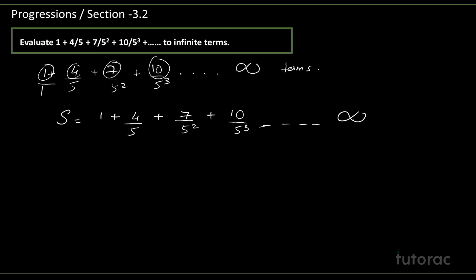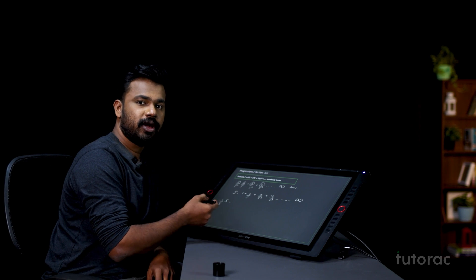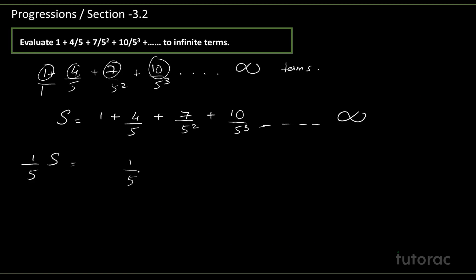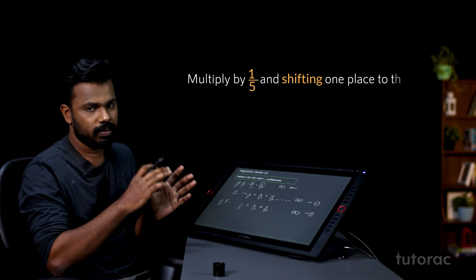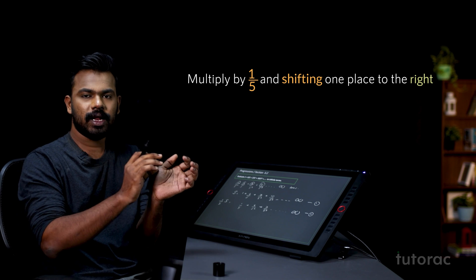What I am going to do is multiply the whole sum by 1/5 — the common ratio — and also shift one place to the right. So S/5 = 1/5 + 4/5² + 7/5³ ... up to infinity. This is the second equation, obtained by multiplying S by 1/5 with a one-place shift to the right.